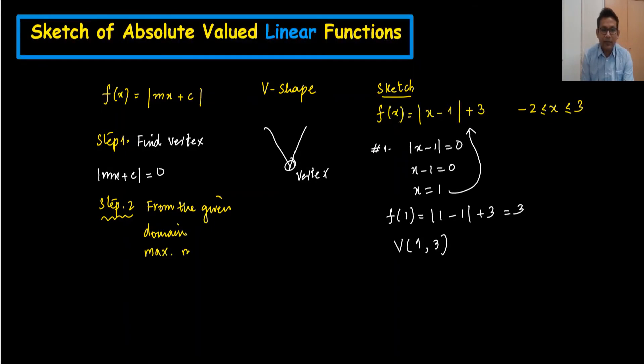Maximum and minimum value of y. That means we need two more coordinates. When domain is not given, we have a very simple way to do. Now when I substitute minus 2, step number 2 is here: x I will substitute minus 2 and x I will substitute 3. So when I substitute minus 2, f of minus 2 is coming minus 2 minus 1 plus 3. We have minus 3. When we open this modulus sign, this will become positive. The numerical value is positive. So 3 plus 3 is 6. So the coordinates are (-2, 6).